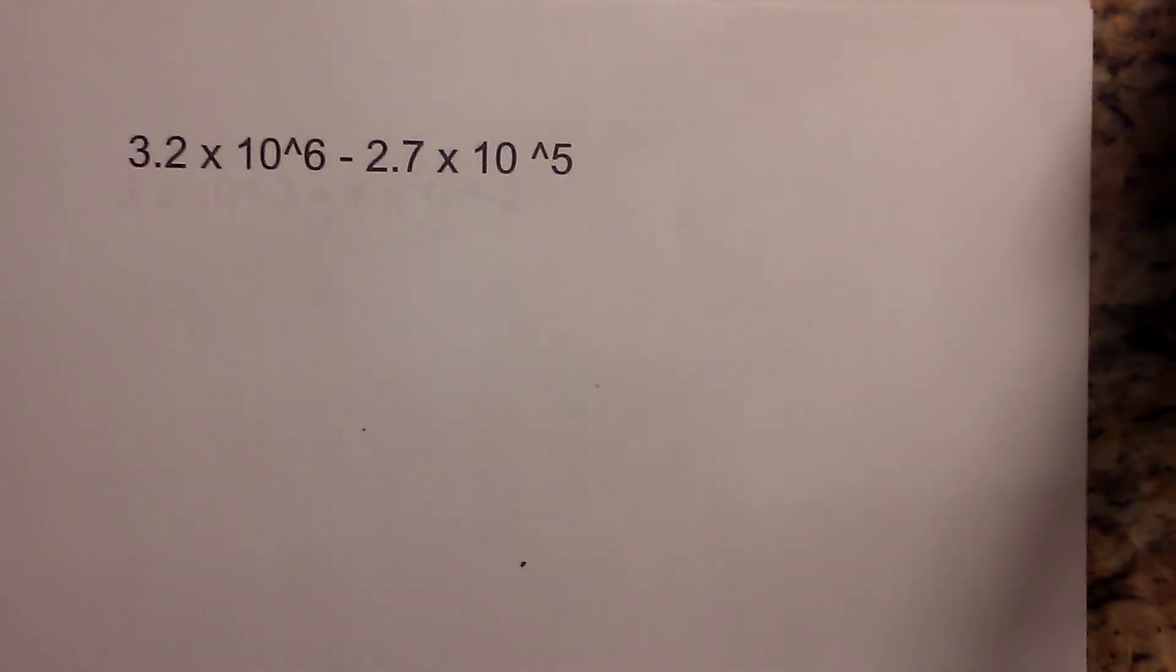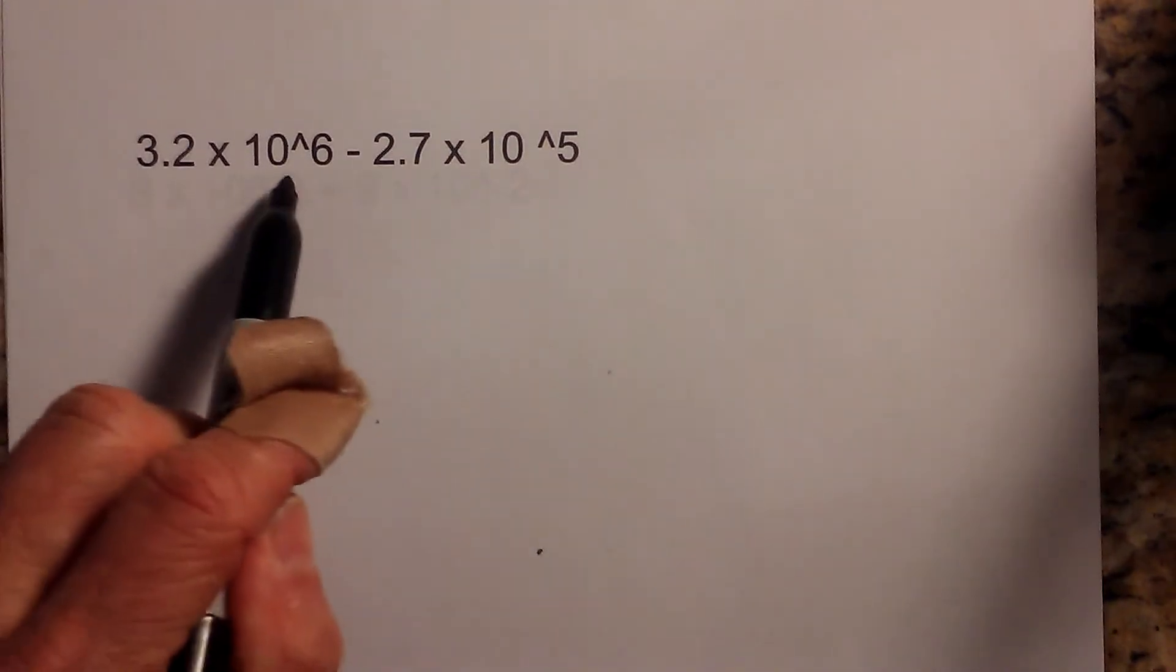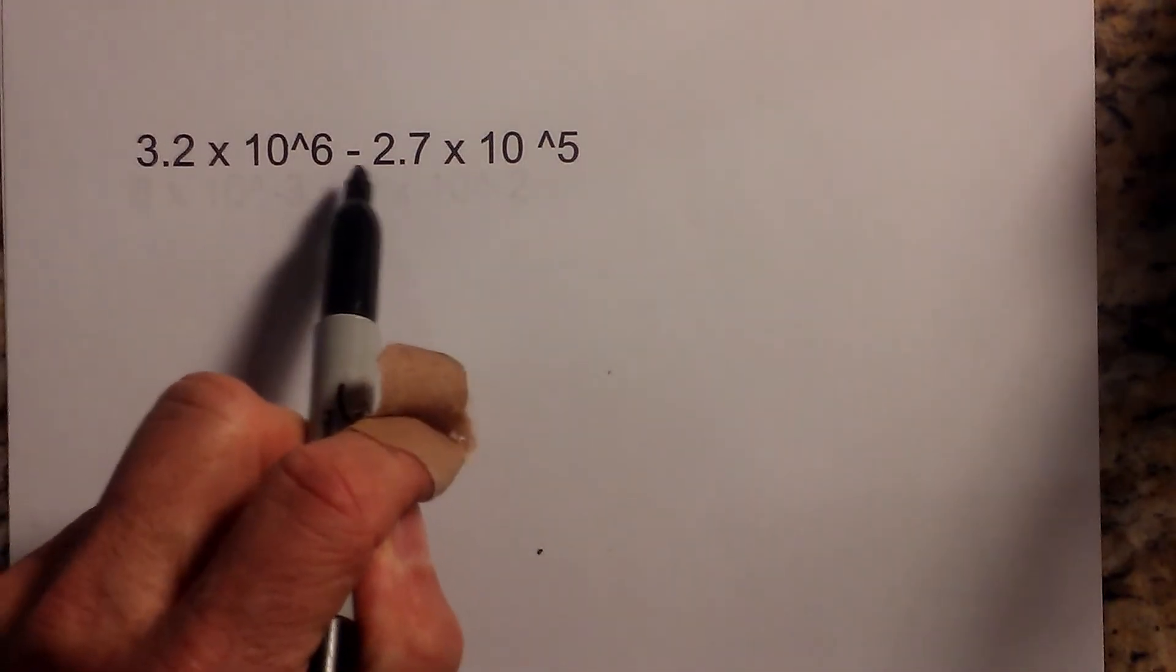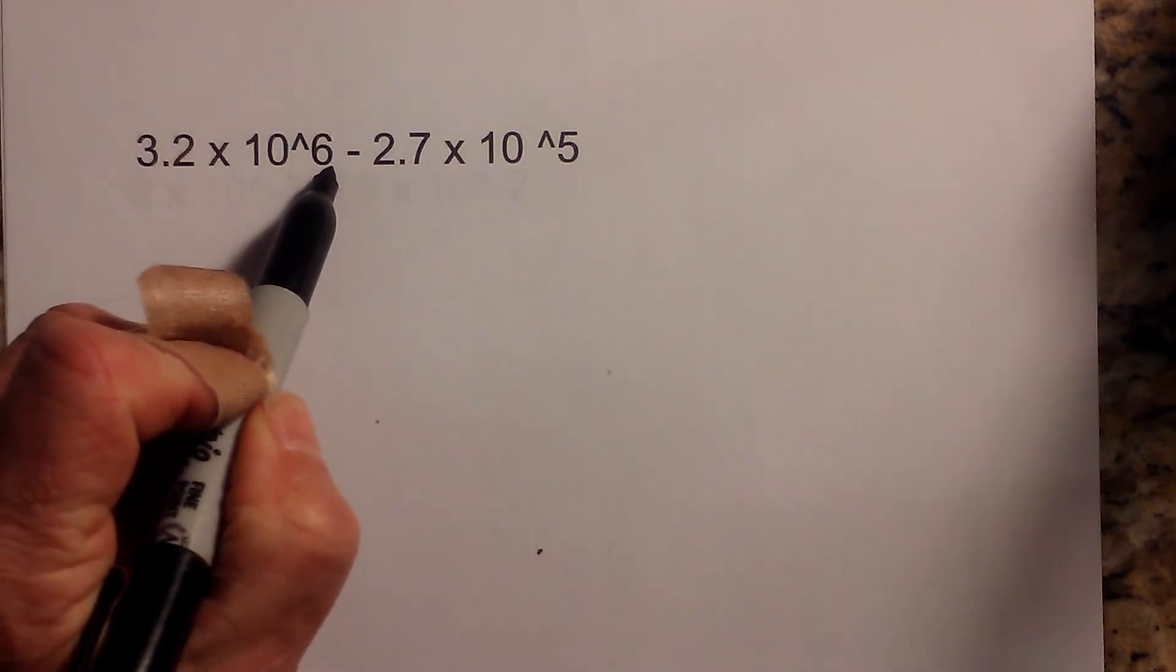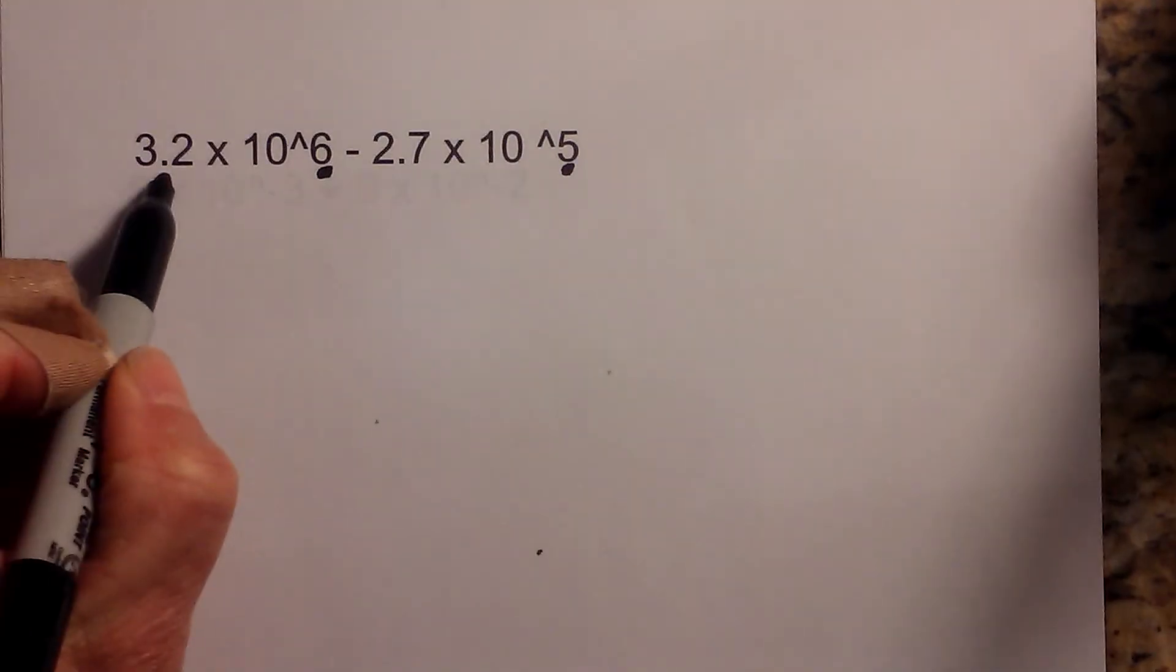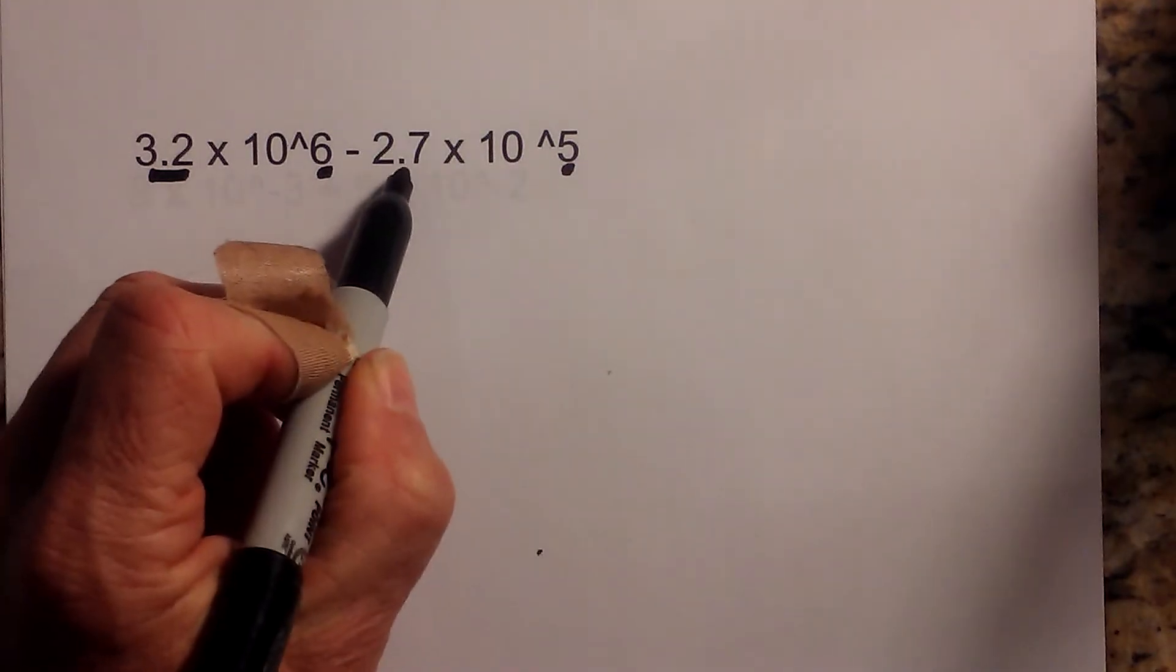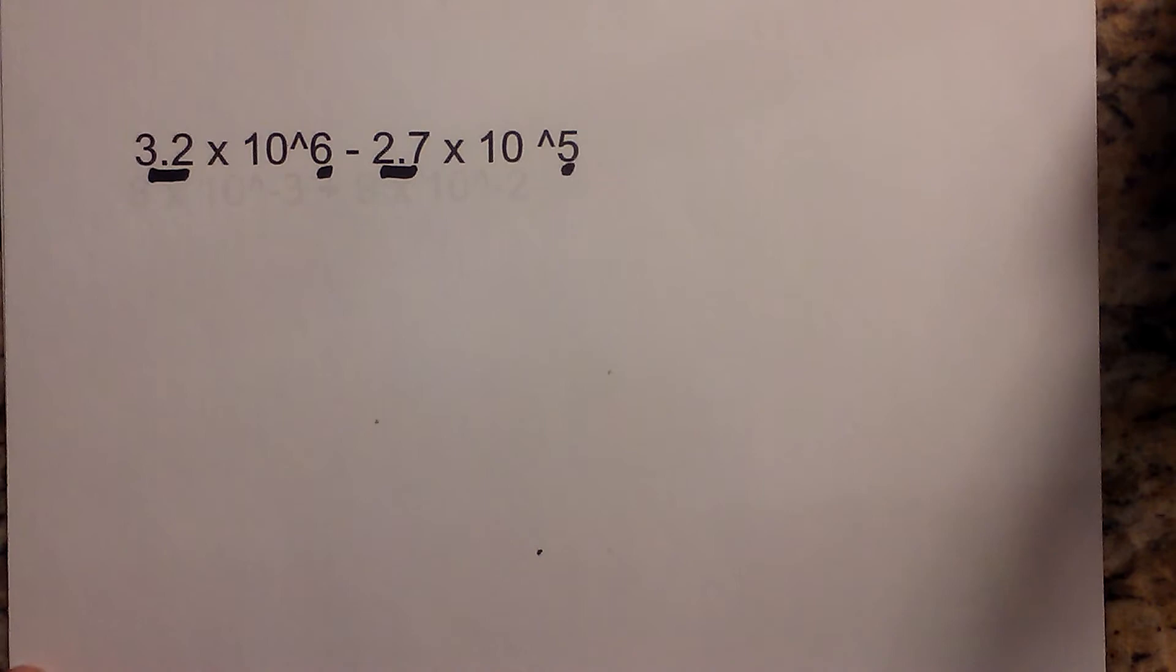Okay, we have 3.2 times 10 to the 6 minus 2.7 times 10 to the 5th. So the exponents are not equal because we have 6 and 5, and 3.2 and 2.7 are the coefficients.